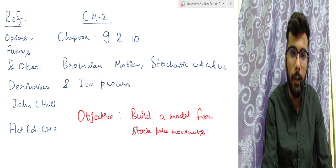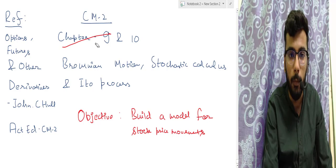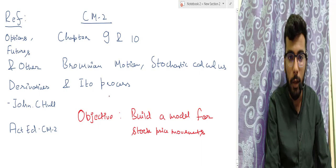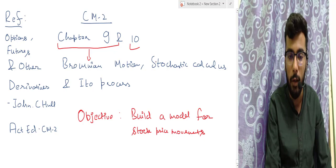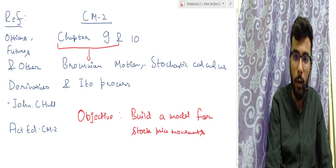Hello and welcome guys. In this video I will start off with chapter number 9 and 10 of subject CM2, which are basically Brownian Motion, Stochastic Calculus and Ito Process. We will be studying all these together. Chapter 9 basically pertains to Brownian Motion and Chapter 10 pertains to Stochastic Calculus and Ito Process, but I will be taking them all together in order to have a holistic understanding.